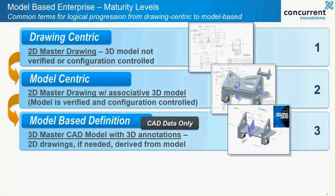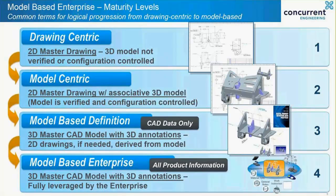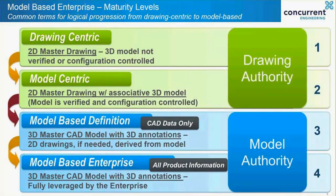The third level of maturity is model-based definition. Here all the information required to manufacture and inspect the product is included in a single 3D file, and it is the 3D CAD model that is the master, usually accessed electronically by the downstream user. The fourth and final level of maturity is model-based enterprise, where the 3D model is fully leveraged by all downstream departments, both internally and externally, who will access it via a data management solution. With levels 1 and 2, the 2D drawing is still the authority, whereas when we move up through levels 3 and 4, the 3D model becomes the master and the 2D drawing becomes virtually redundant.